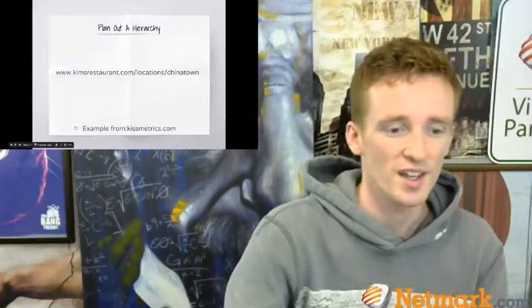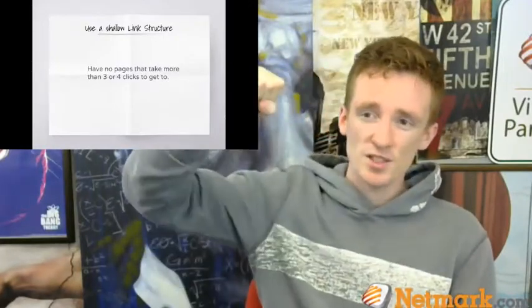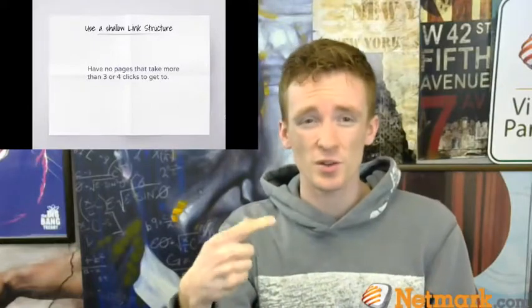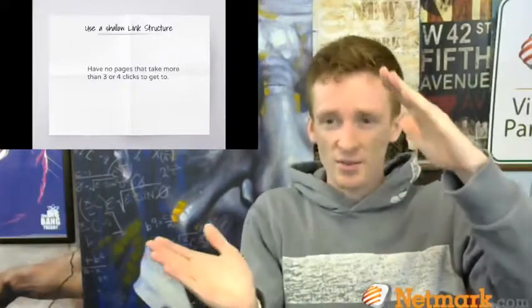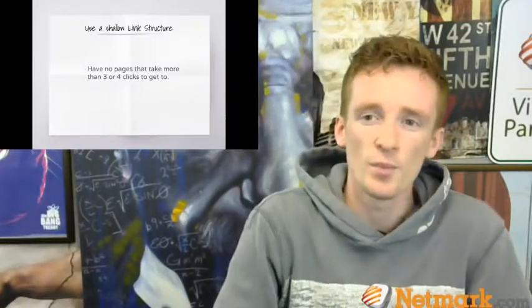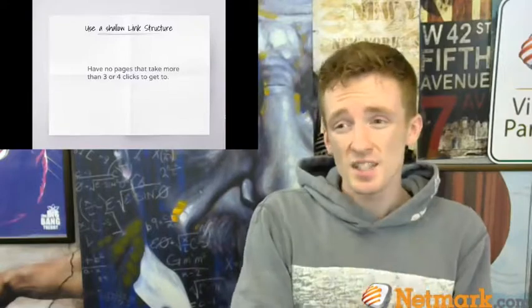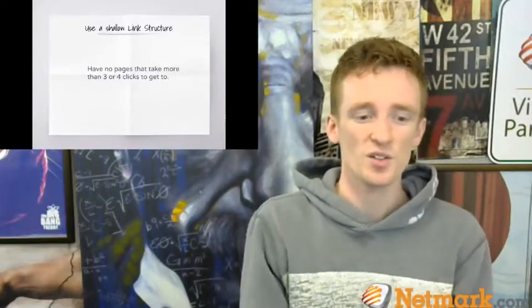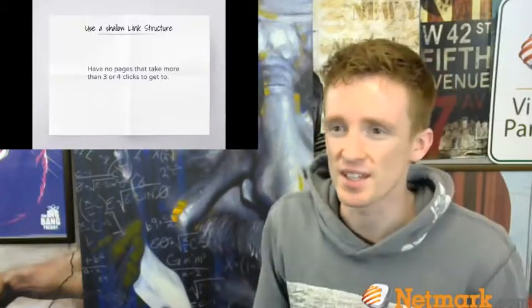This is what's called a shallow link structure. You have the first page of your website and you want everything to be within three or four clicks of that. If you've been on a website that's really hard to use, it's probably because they have too many layers of links. Keep it very shallow and straightforward: home page, subcategory, another category, then your destination. Most websites can work within this structure, and it makes it easy for users which makes Google happy.